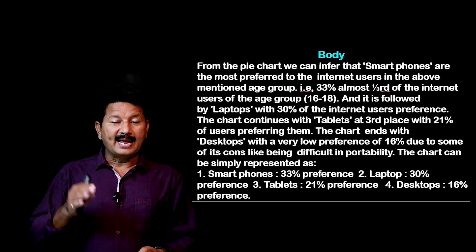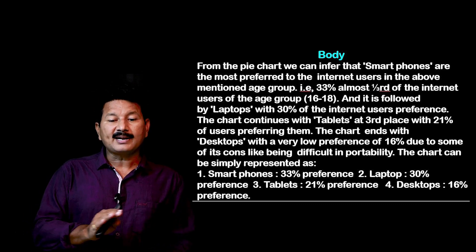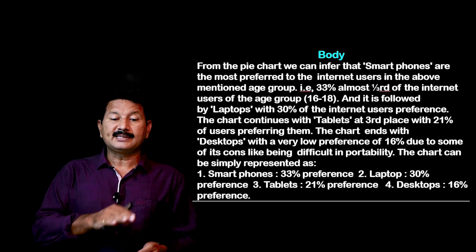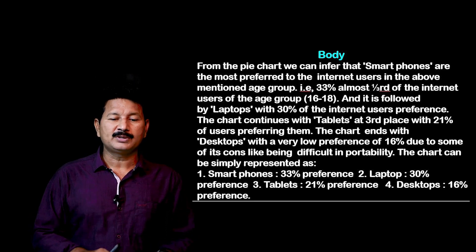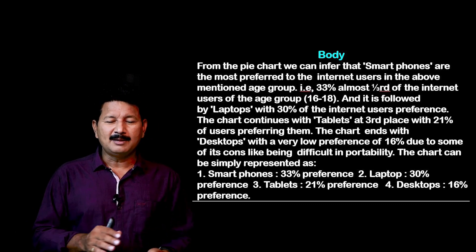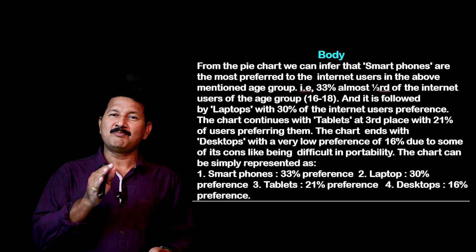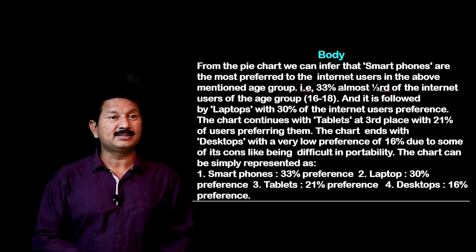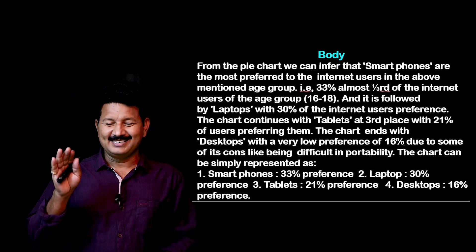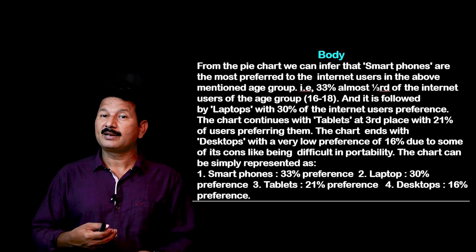Smartphones account for 33% — almost one-third — of internet users aged 16 and above. This is followed by laptops with 30% preference. The chart continues with tablets in third place with 21% of users preferring them, and ends with desktops at a very low preference of 16%, due to their difficulty in portability. The chart can be simply represented as: smartphones 33%, laptops 30%, tablets 21%, and desktops 16%.